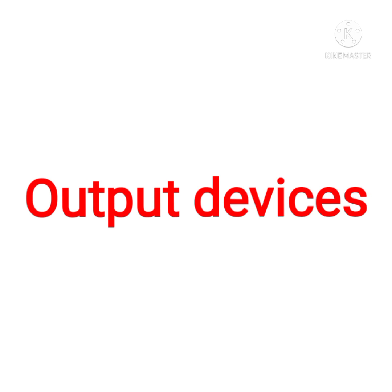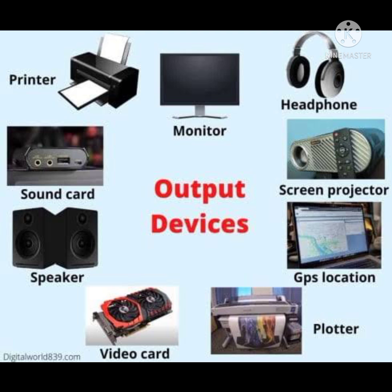Now, output devices. Output devices are those devices from which we can get the output — we can say we can get the result from the computer after processing the information. The names of the output devices: printer, monitor, headphone, screen, projector, GPS.